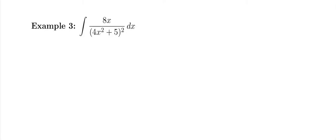Here we have to take the antiderivative of 8x over (4x² + 5)² dx. I really like this problem because it looks like a quotient rule from when we did derivatives. When it looks like a quotient rule for antiderivatives, we know we have to use u-substitution for sure.